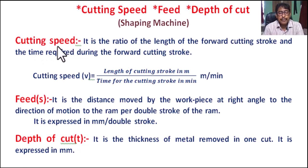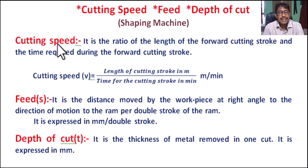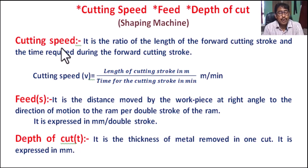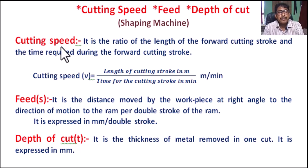The cutting speed is the rate at which the metal is removed by the cutting tool. In a shaper machine, the cutting speed is considered only during the forward stroke — that means the forward cutting stroke. So cutting speed is the ratio of the length of the forward cutting stroke and the time required during the forward cutting stroke.